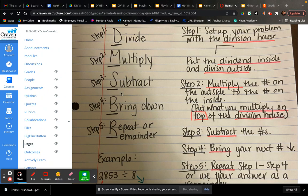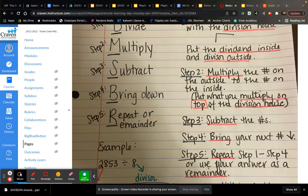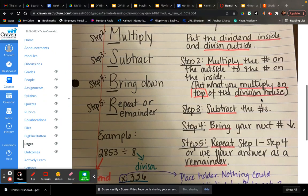So you're going to divide, multiply, subtract, bring down, repeat, or remainder, depending on what the question is asking. So step number two, you multiply the number on the outside to the number on the inside. Make sure when you're multiplying whatever number you multiply on the outside, you put that number on top in your answer or on top of the division house.